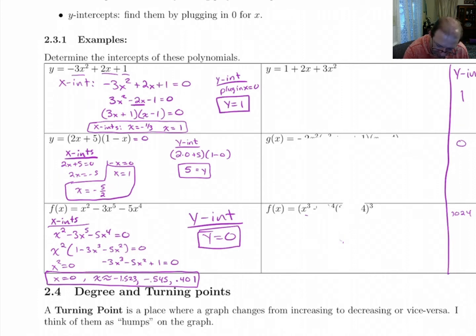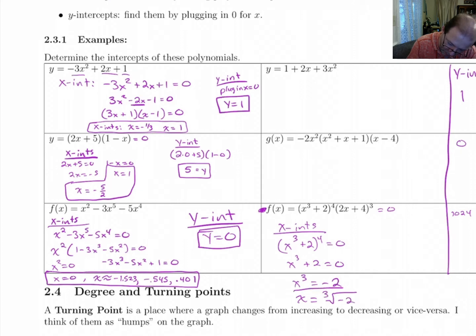The x-intercepts are going to be easier on some than others. Now, this one that's, let's start with this one on the bottom. The x-intercepts here, we'll just set each one of these things individually to 0. So (x³ + 2)⁴ = 0. Take the 4th root of both sides. So you get x³ = -2. So you get the cube root of -2. And then the other one, you get (2x + 4)³ = 0. Take the cube root of both sides of that. You get 2x + 4 = 0. So that'll give you x = -2.